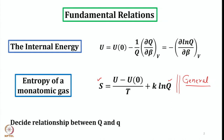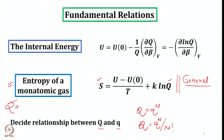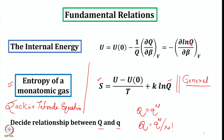We have to be careful to decide the relationship between Q and q — that is, whether to use Q equal to q raised to the power n, or Q equal to q raised to the power n divided by n factorial. We can extend this equation to derive another equation for the entropy of a monatomic gas, which we called the Sackur-Tetrode equation. This is the general expression connecting entropy with internal energy and canonical partition function.